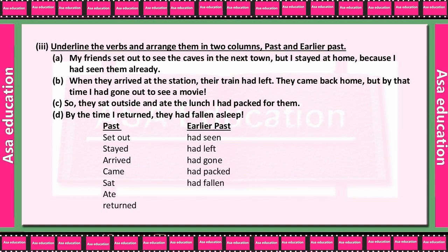Second sentence: When they arrived at the station, the train had left. They came back home but by that time I had gone out to see a movie. Past: arrived, came. Earlier past: had left, had gone. Third: so they sat outside and ate the lunch I had packed for them. Past: sat, ate. Earlier past: had packed. Fourth: by the time I returned, they had fallen asleep. Past: returned. Earlier past: had fallen.